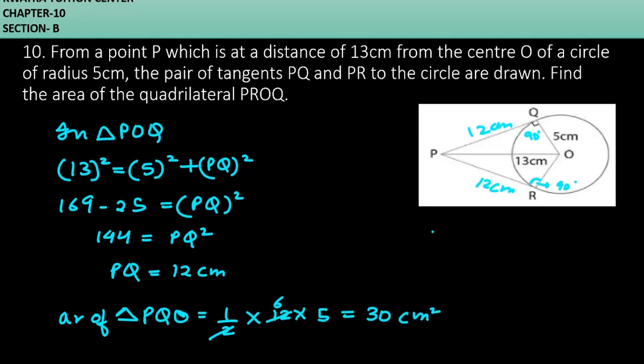And yes, if you want to find the area of quadrilateral, just multiply it by two. 2 times 30 will give you 60 cm squared. So yes, this is your answer for question number 10. Now, moving to the next one.